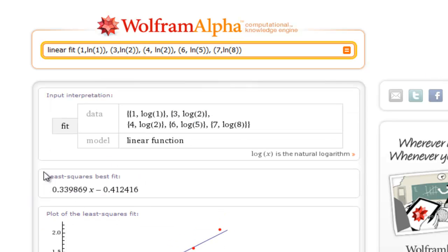And doing that linear least squares best fit gives me 0.339869 times x minus 0.412416.